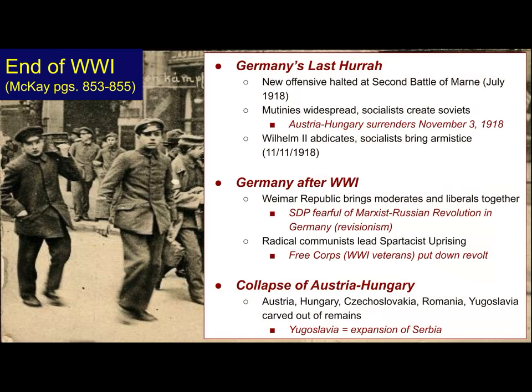The new government is called the Weimar Republic — a combination of moderates and liberals — just trying to end this war and move things forward. They're worried that the Russian Revolution will leak into Germany, because the Social Democratic Party, while it wanted reforms, didn't necessarily want a revolution like they're seeing in Russia. There was really a push to get things settled before that happened. There is a group of radical communists within Germany who do try to lead an uprising, and the Weimar Republic brings together some World War I veterans called the Free Corps to put down that revolt.